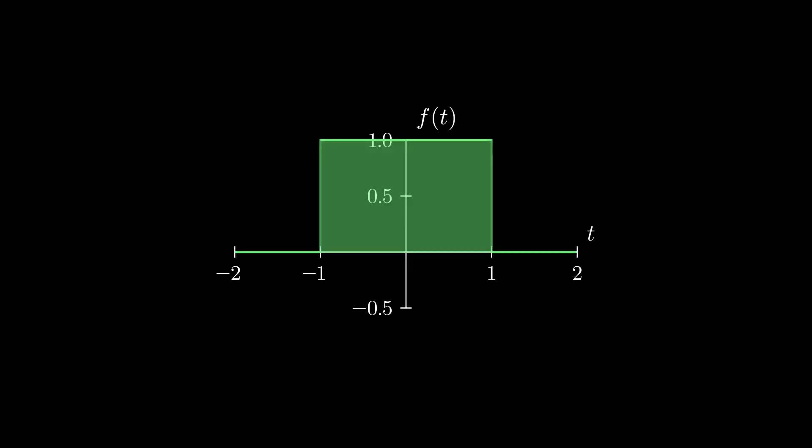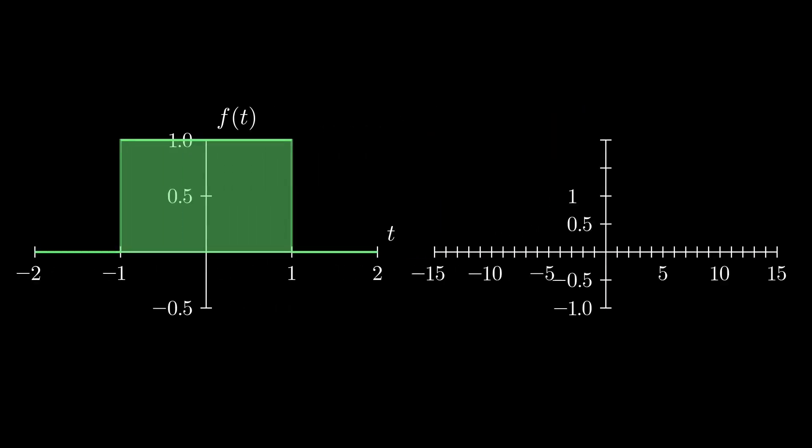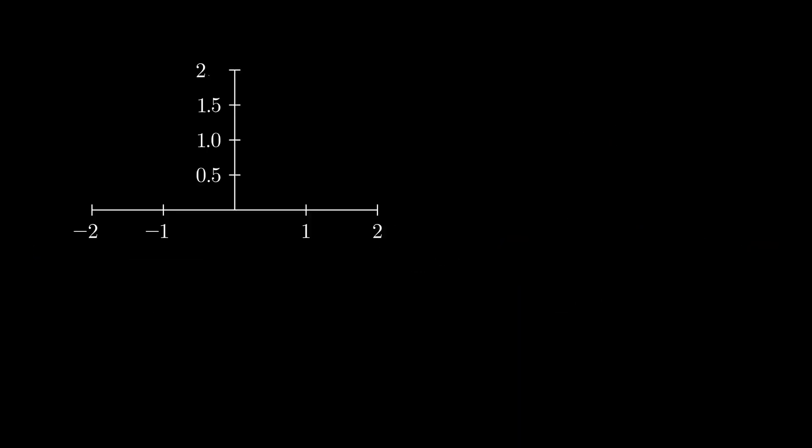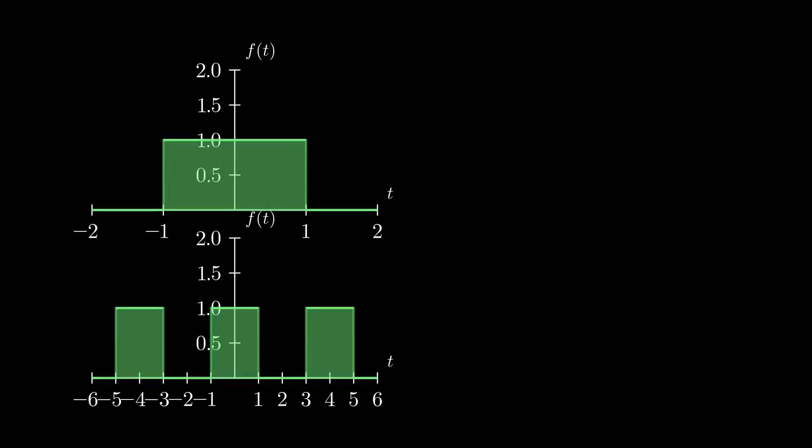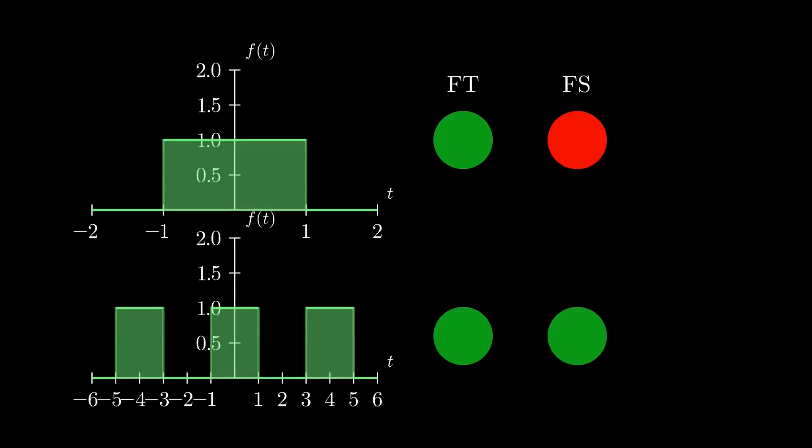In its raw form, a signal is described as a function of time. What the Fourier transform does is this. It transforms the description of a signal from time domain into frequency domain. I'd argue that Fourier transform is more general than Fourier series, because it can be applied to both periodic and non-periodic signals. On the other hand, Fourier series can only be applied to periodic signals.